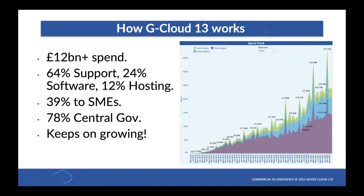There's been over £12 billion spent through G-Cloud, making it an extremely successful framework. 64% goes through cloud support, 24% through software, and 12% through hosting. 40% of that spend goes to SMEs and just under 80% to central government. CCS are anticipating £3 billion to go through this iteration in this financial year alone — at 0.75% levy, the framework is worth quite a lot to them.